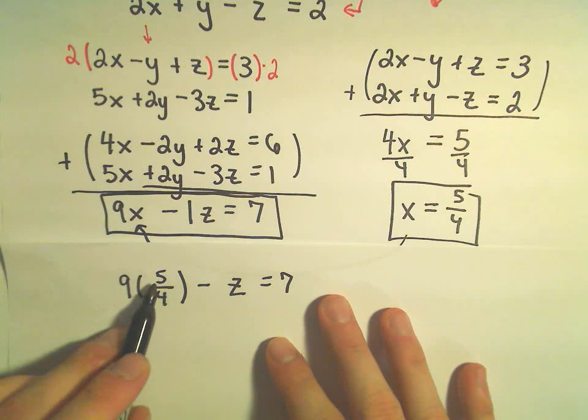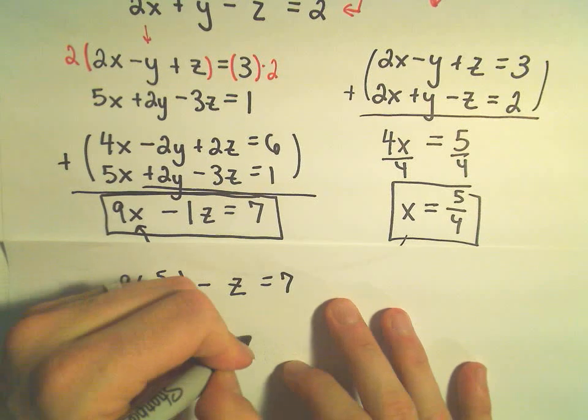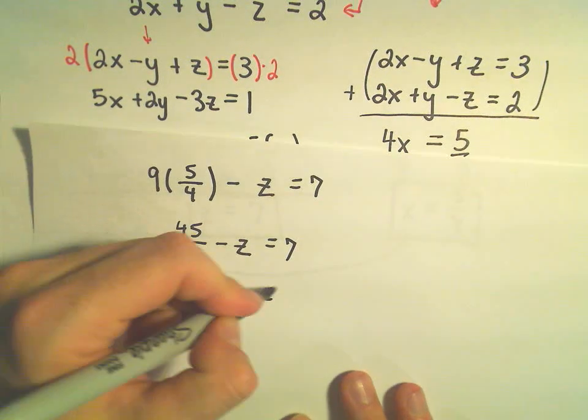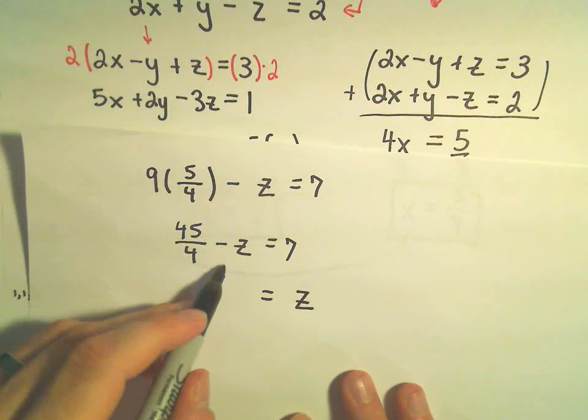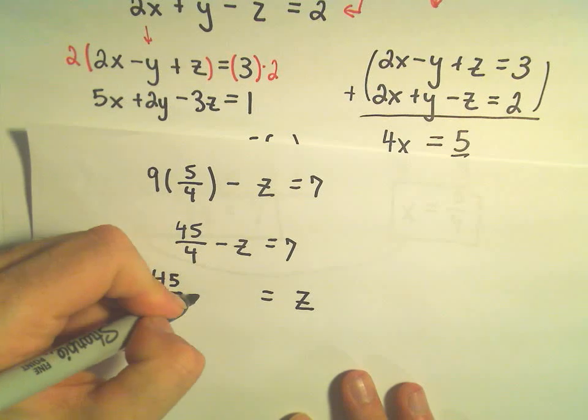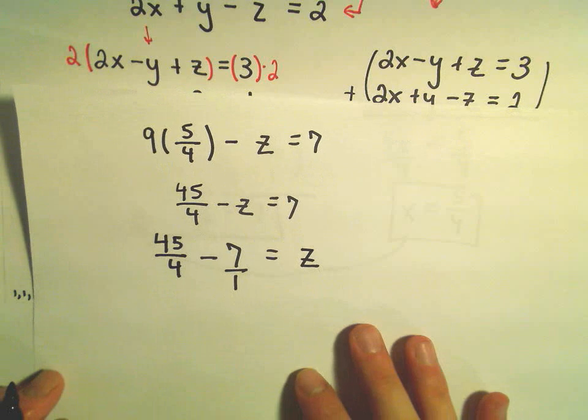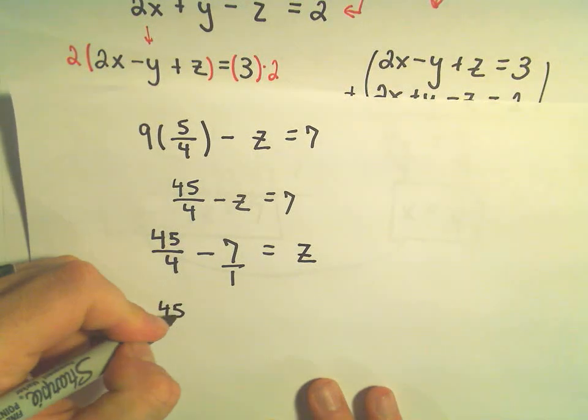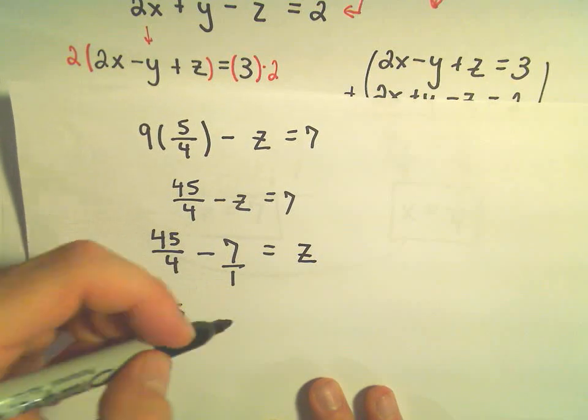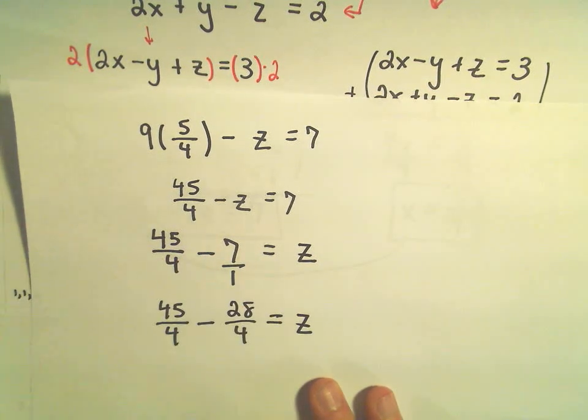So we have 9 times x which is 5 fourths minus 1z equals 7. Well, let's see. So 9 times 5, that's 45 over 4 minus z equals 7. And what I'm going to do is I'm going to add z to both sides. So that would give me a positive z on the right. And then I'm going to subtract the 7 from both sides. So we would have to get common denominators. So 45 over 4, we could multiply top and bottom by 4. And that would give us 28 over 4 equals z.